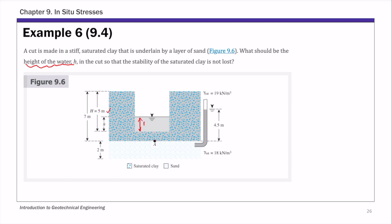This body of water, small h, inside the cut is basically helping the stability of the saturated clay. We have clay and sand. Just as in the previous example, the most critical location is at the bottom of the clay, or at the top of the sand layer — at point A. At the limiting state, the most critical condition is when the effective stress at point A becomes zero.